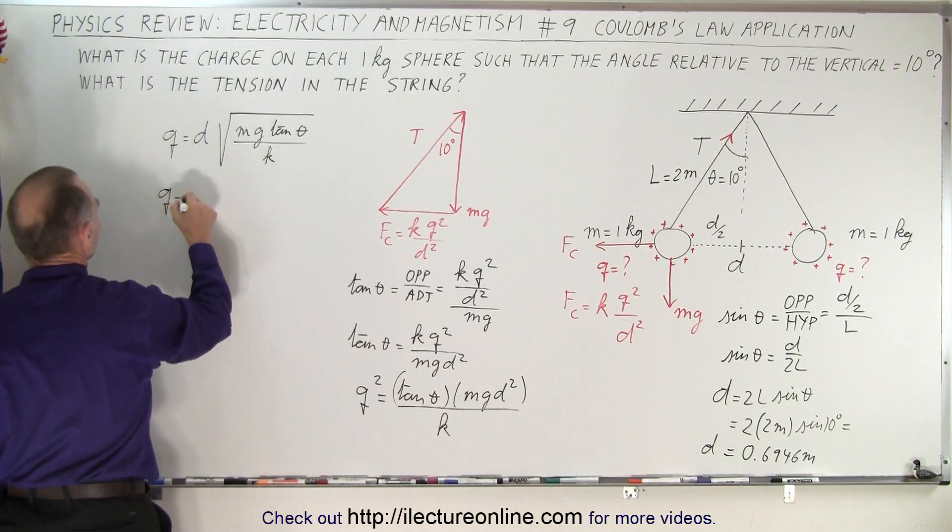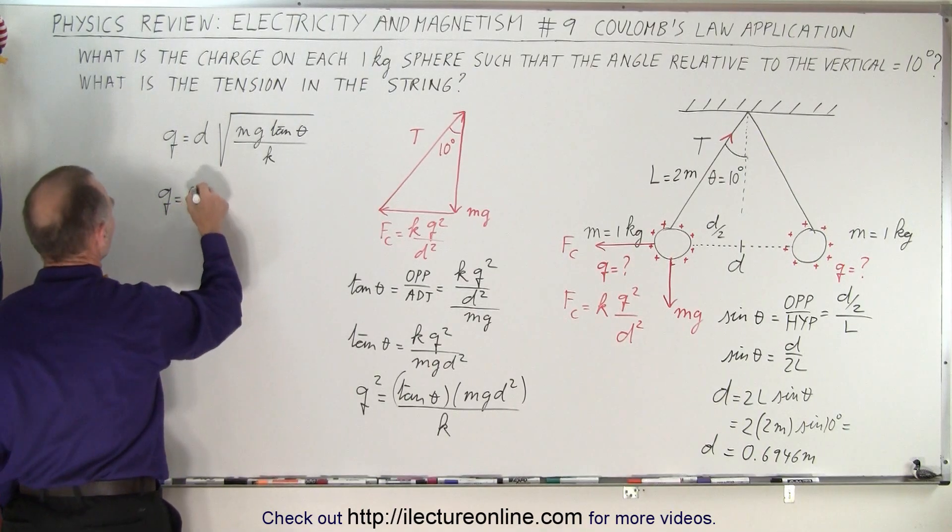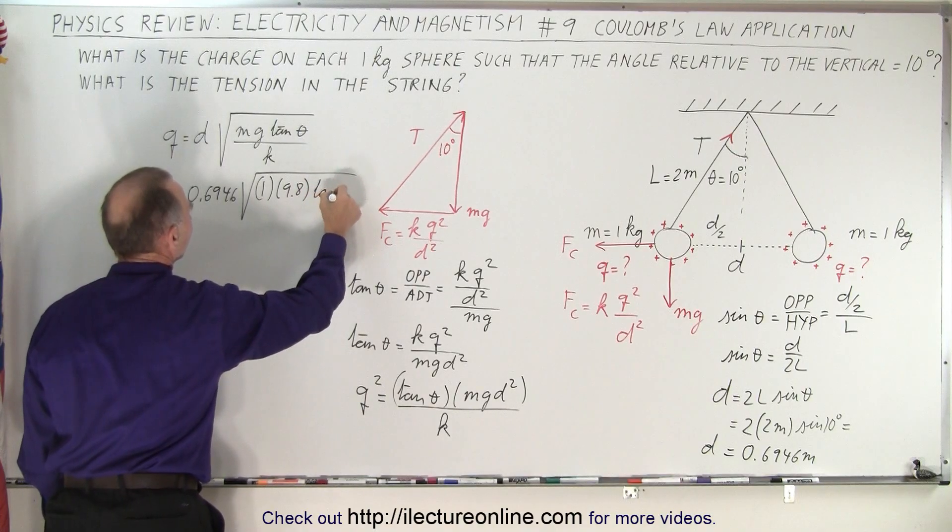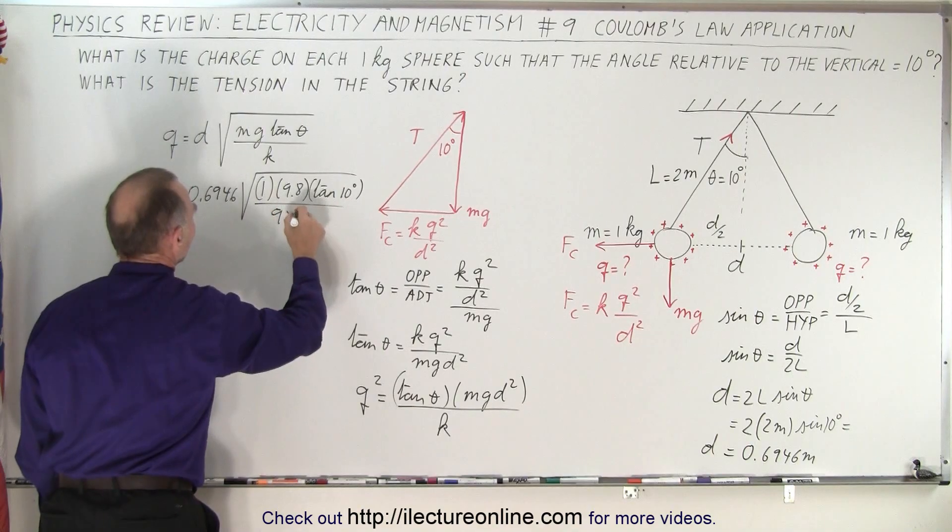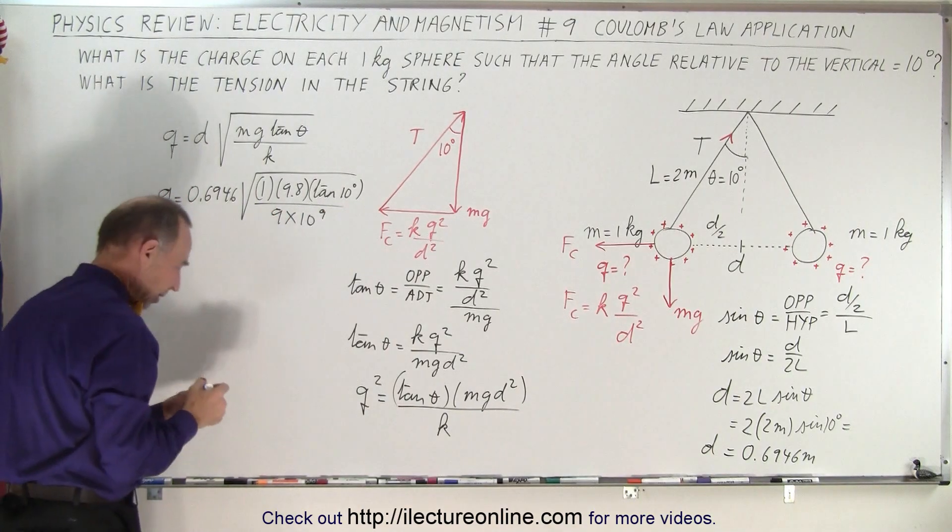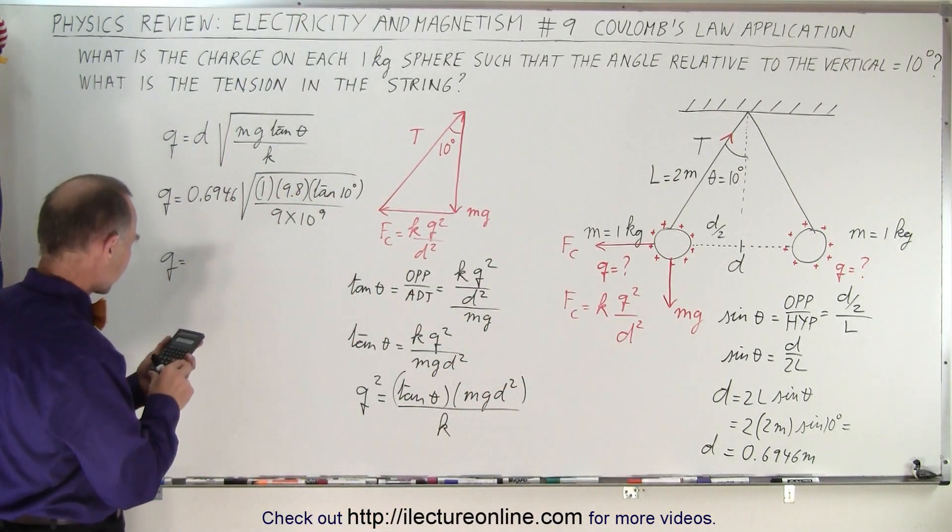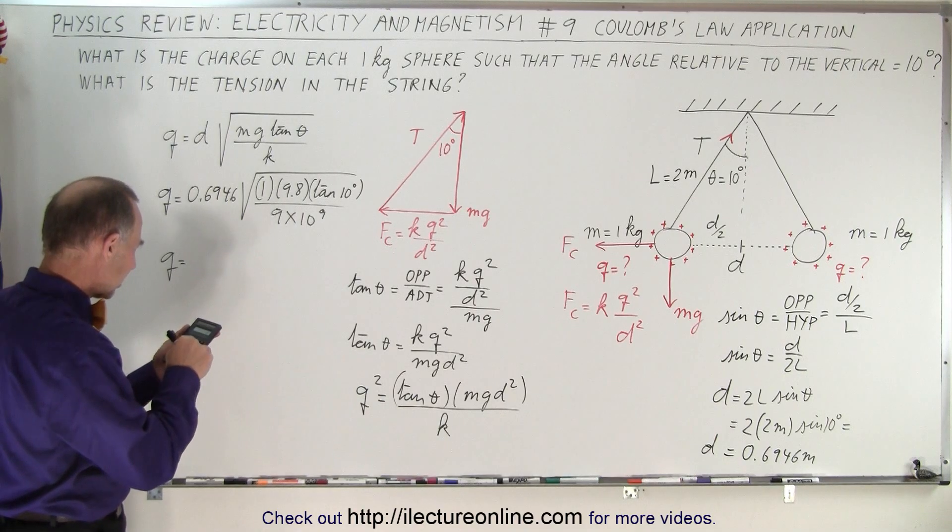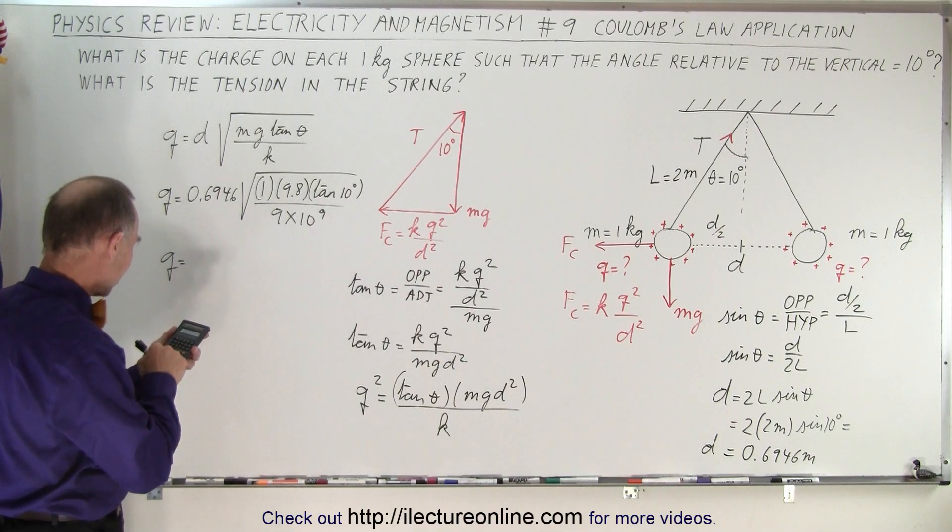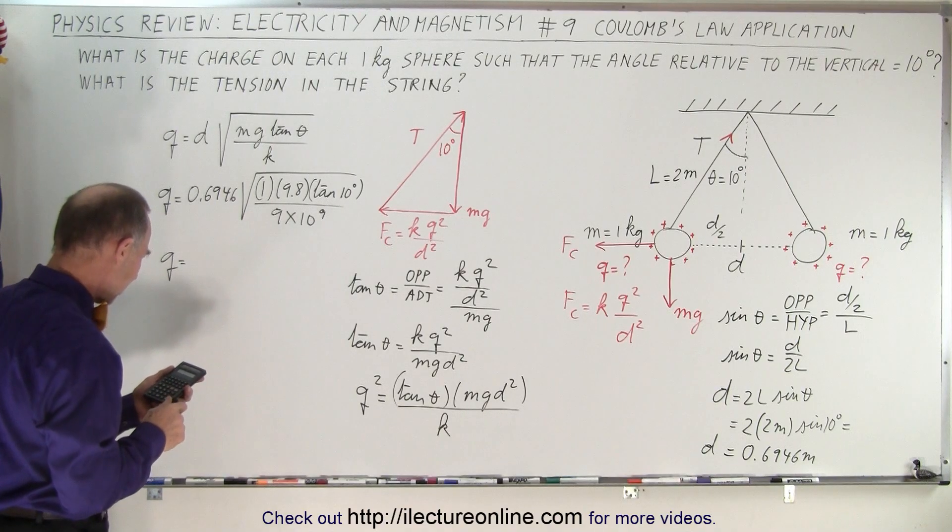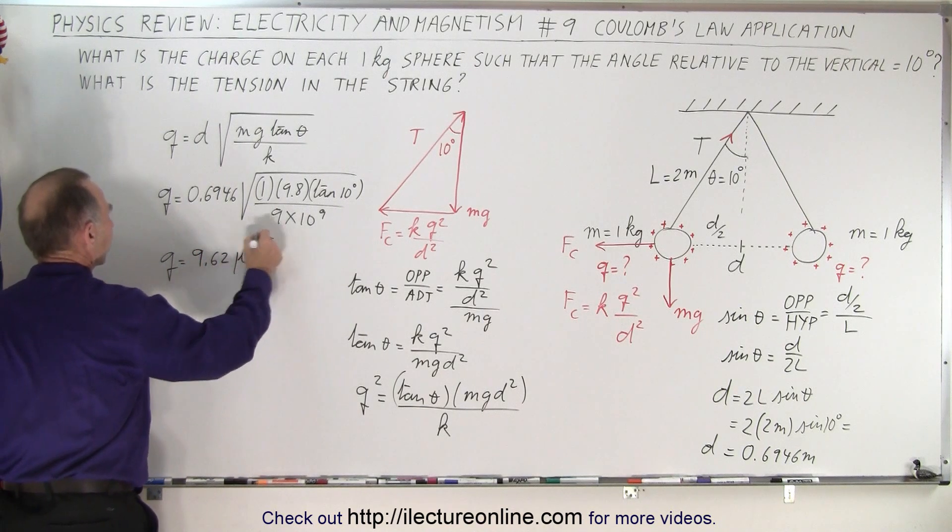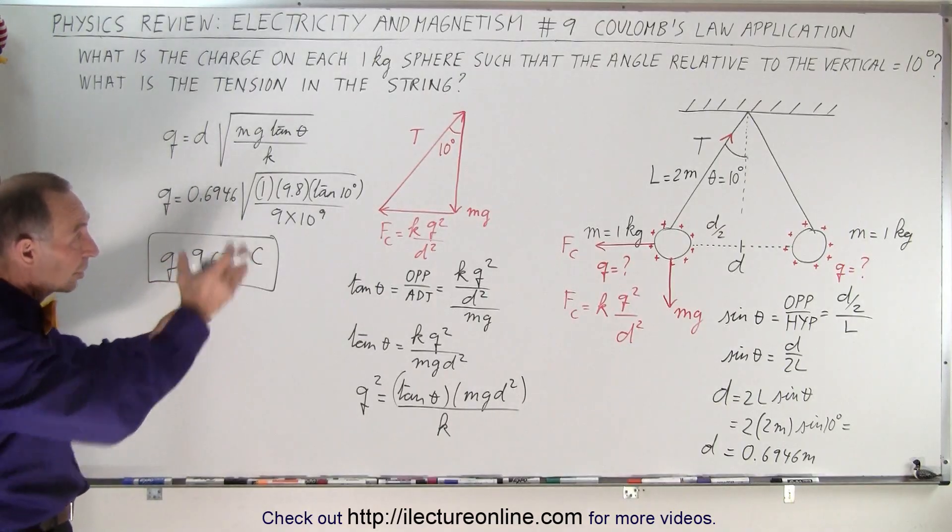And then if we plug in all the values, we can say that Q is equal to the distance which is 0.6946 times the square root of 1 times 9.8 times the tangent of 10 degrees divided by 9 times 10 to the 9th. So now let's find out what the charge required is to keep them that distance apart. So we multiply that times, oh let me start over. So we have 9.8 times 10, take the tangent, divided by 9e to the 9th, take the square root, and then multiply that times 0.6946 equals, and we have 9.62 microcoulombs. That charge will cause those two spheres to be pushed apart so that the angle is 10 degrees.